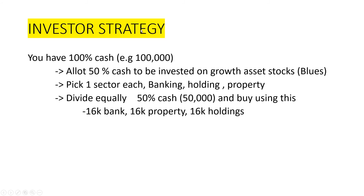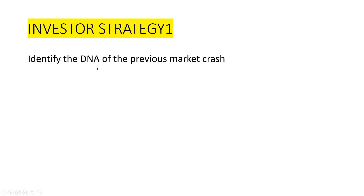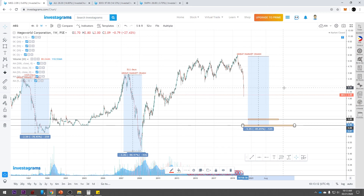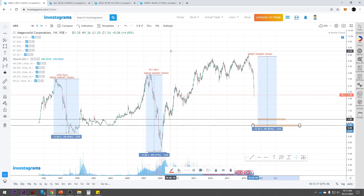Let's try to develop a simple strategy for investors. Say you have 100% cash right now, let's say 100,000 pesos. What we do is allocate half of it — 50,000 pesos — into growth assets like stocks. Specifically, pick blue chip stocks, one from each sector: one from banking, one from holding, one from property. The purpose is diversification. Divide the 50,000 equally — about 16,000 pesos each. Next, identify the historical DNA of the assets you picked to see how they performed during previous market crashes, then try to replicate what's possible in the current crash.